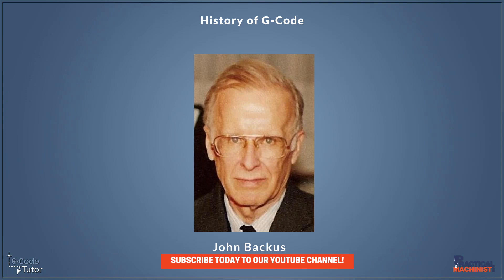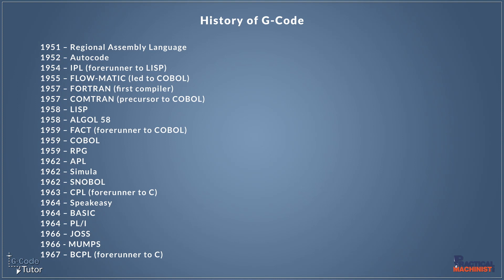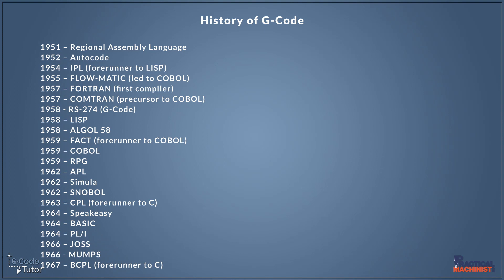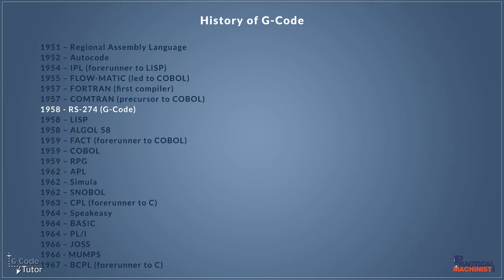We know that MIT was using and experimenting with G-Code in 1958. This is important when we look at all the programming languages put together around that time. Starting with a regional assembly language in 1951, we can see FORTRAN coming out in 1957 with the first compiler to convert it into a low-level programming language. LISP was also invented around the same time, but G-Code came in right there at the forefront — making G-Code one of the earliest languages that we still use.